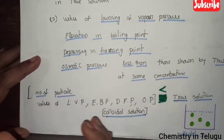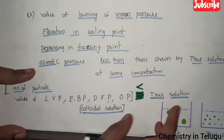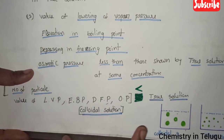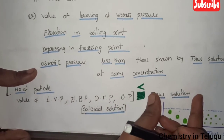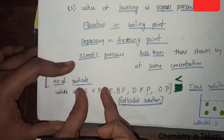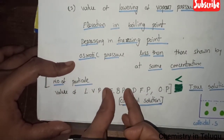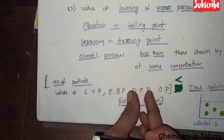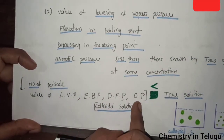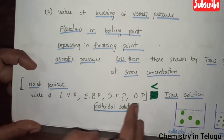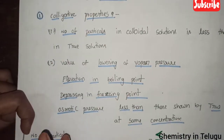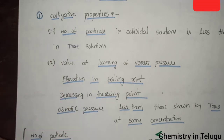These five colligative property values are less than those compared to true solution at the same concentration. So, in colloid solution the number of particles is less, and accordingly the values of lowering vapour pressure, elevation in boiling point, depression in freezing point, and osmotic pressure are also less. So we have the colligative property as the first property.